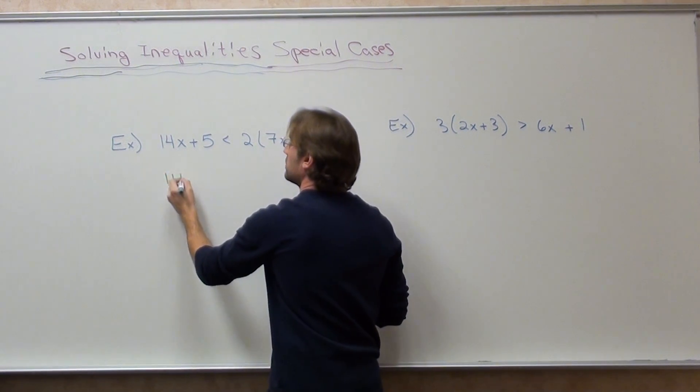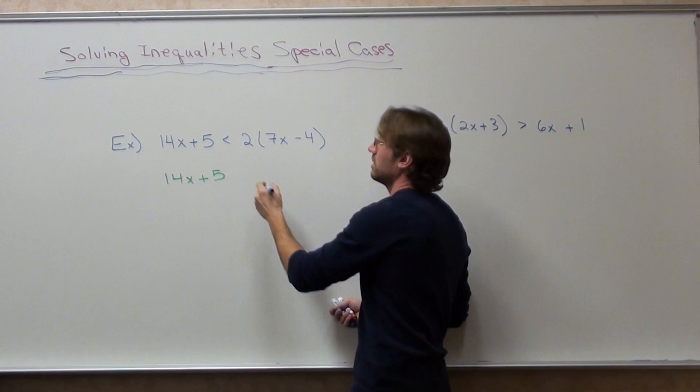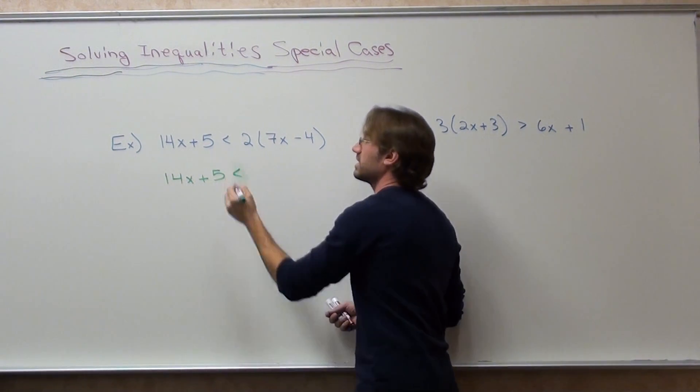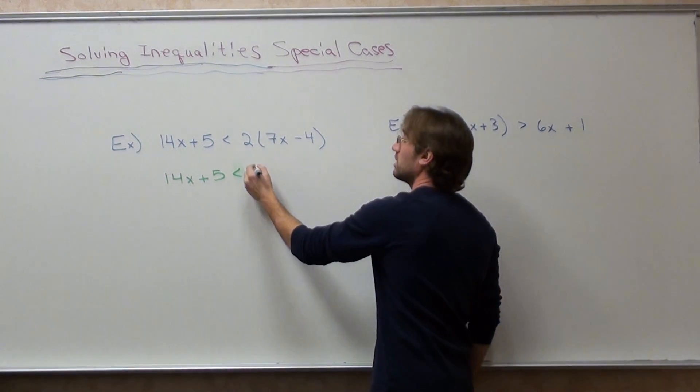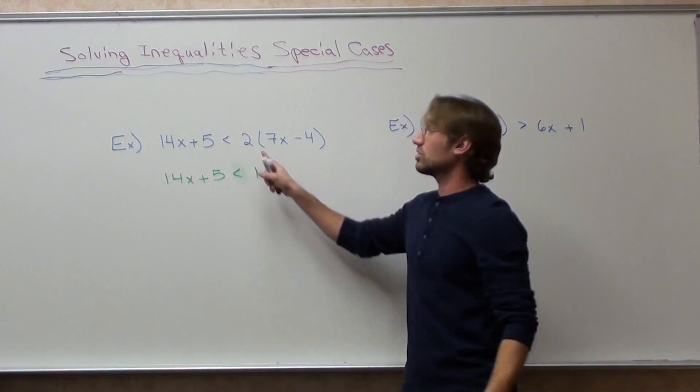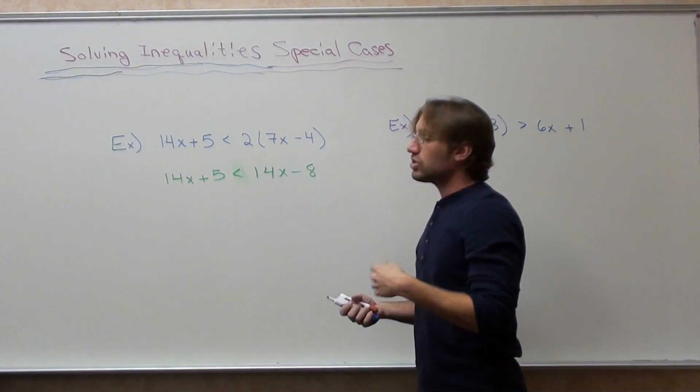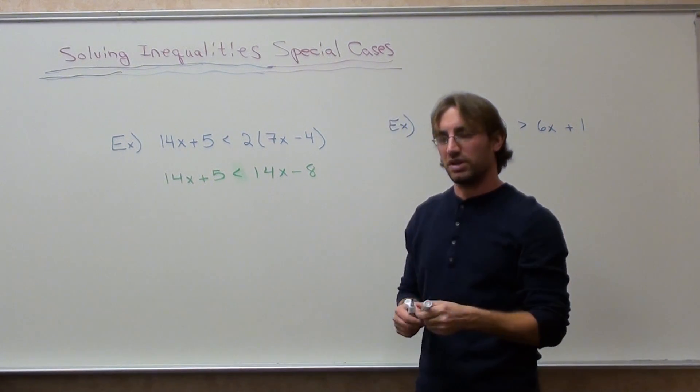So 14x plus 5, can't do anything there, is less than 2 times 7x, because I'm going to distribute, is 14x. 2 times negative 4 is negative 8. And I'm going to solve for x. It means I get everything with an x on one side, everything without a number on the other.